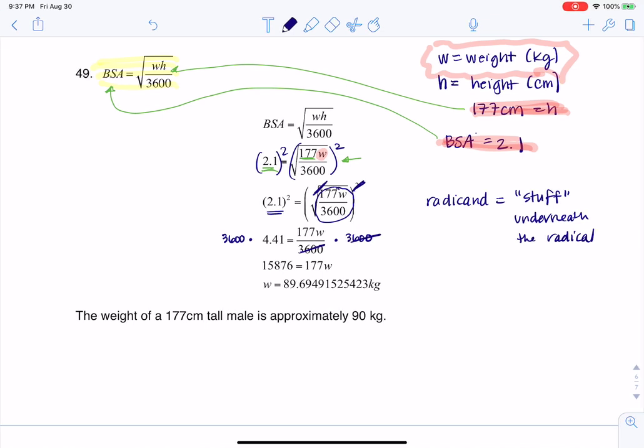This is going to cancel here. And on my calculator, if I do 3,600 times 4.41, I arrive at 15,876.